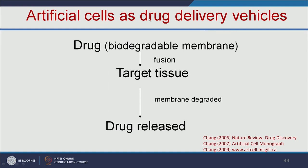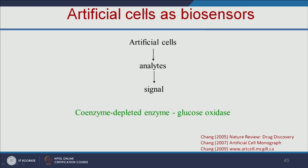We can also use artificial cells as drug delivery vehicles. These artificial cells are made of biodegradable membranes, and drugs or therapeutic molecules can be added and released at a particular location. We can target these artificial cells to deliver drugs to a specific location for various therapeutic applications. These artificial cells can also act as biosensors — for example, if glucose levels are high in the blood, they can interact with glucose and produce a fluorescent signal.